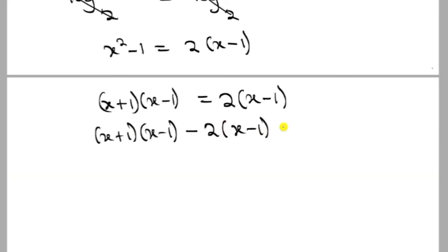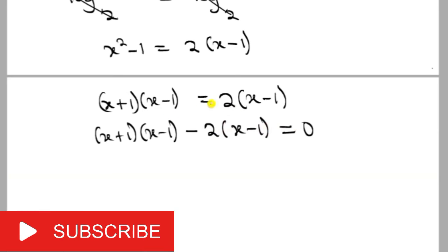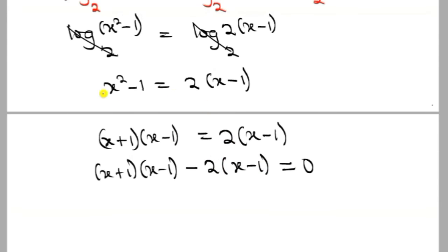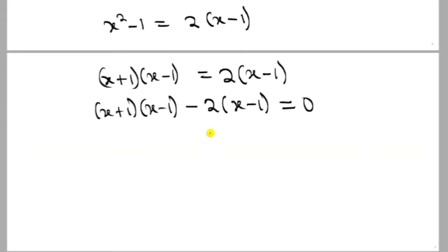You know, if you are not careful, you'll be tempted to divide both sides by x minus 1. If you do that, the answer you will get will just be one value for x. However, you can see that the equation that we formed here is a quadratic equation, and every quadratic equation is supposed to have two values.